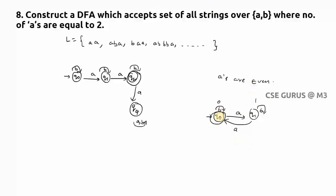Q0 is the final state because it represents an even count. If the count were odd, Q0 would not be final. So Q0 is the final state for number of A's even. You can also note that number of A's are even means A's are divisible by 2 — and you can generalize this approach for divisibility problems.